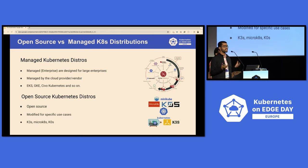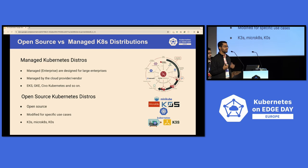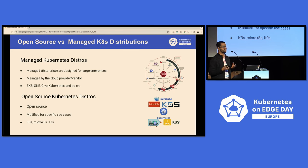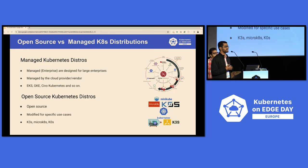Open source distributions are great if your team wants to self-host and self-manage them. But of course, that comes with a caveat — the team will be responsible for upgrading the Kubernetes version and for setting up all the different things like networking that are supported by these distributions.